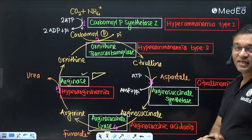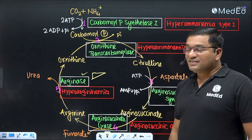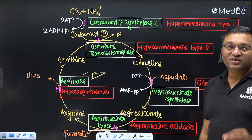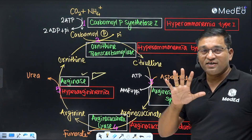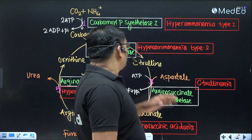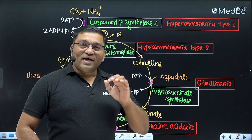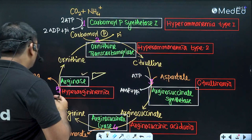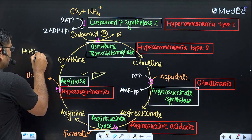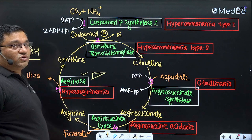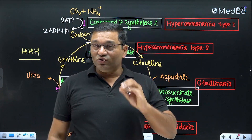This is the urea cycle. The green color indicates enzymes while red color indicates the disorders. Five important disorders are connected with the five important enzymes of the urea cycle. The sixth disorder is Triple H syndrome. These are the six important disorders related with the urea cycle.